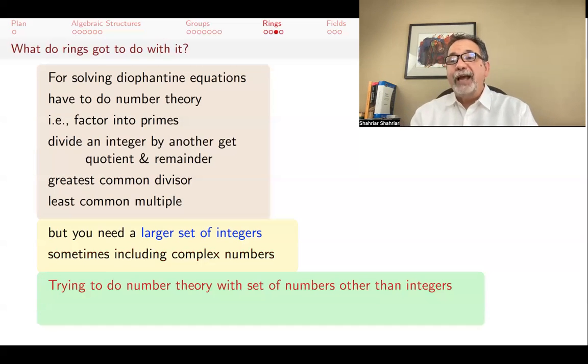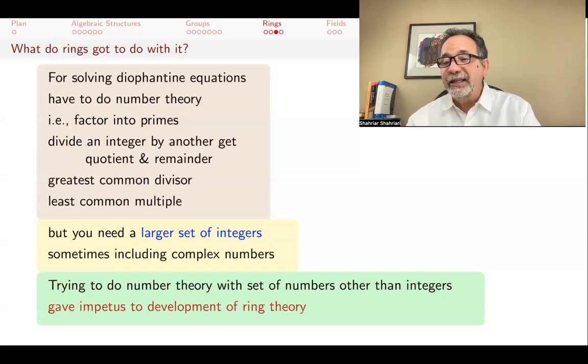For example, given two integers, actual integers, you can divide one by the other and you can get a quotient remainder, with the remainder being smaller than what you divide by. You can find greatest common divisors and least common multiples. You can factor integer into a product of primes, and except for reordering, that factorization is unique. Ring theory is what allows you to do these things in larger classes of numbers, including possibly ones that contain complex numbers. And ring theory becomes indispensable for working on Diophantine equations.